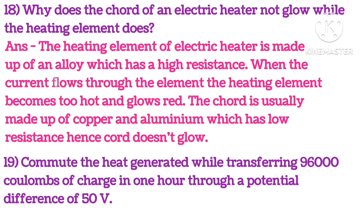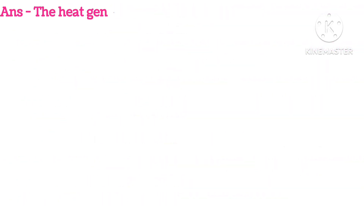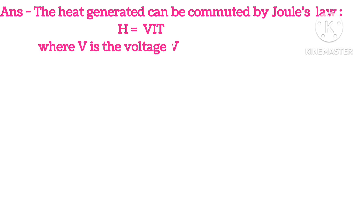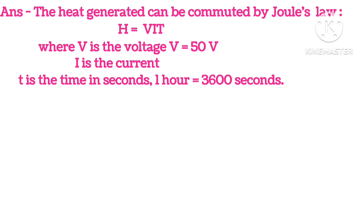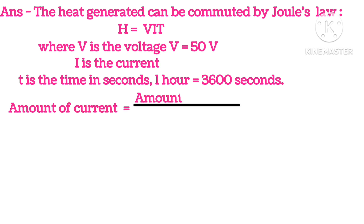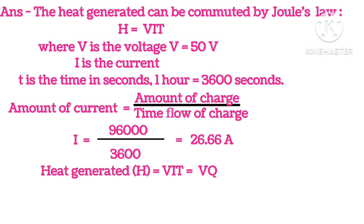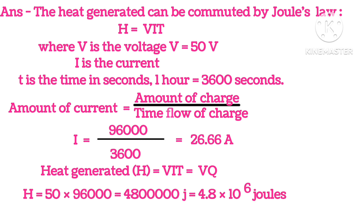Compute the heat generated while transferring 96,000 coulombs of charge in one hour through a potential difference of 50 volts. Using Joule's law, H = VIt. Voltage V = 50 volts, time t = 1 hour = 3600 seconds. Current I = charge/time = 96000/3600 = 26.66 ampere. Heat generated H = VIt = V × Q = 4.8 × 10⁶ joules.